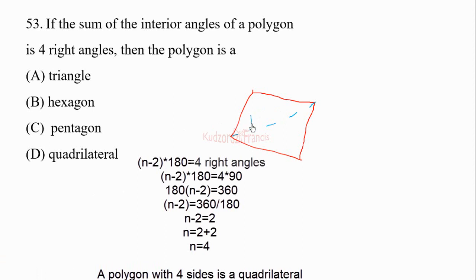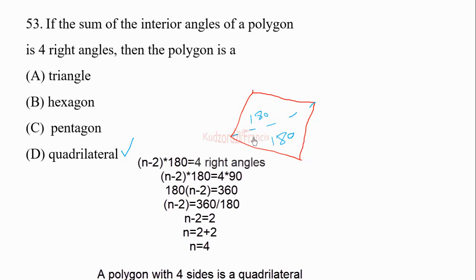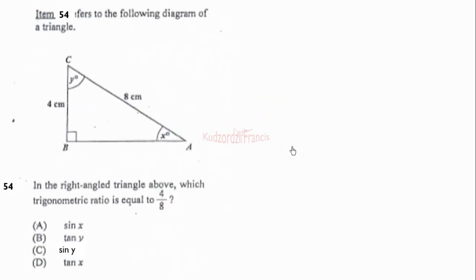So 180 plus 180 gives you 360 degrees, which is four right angles. We can see this polygon has four sides — it is a quadrilateral. You can also divide the quadrilateral the other way, but you must not allow lines to intersect. The correct answer is quadrilateral.